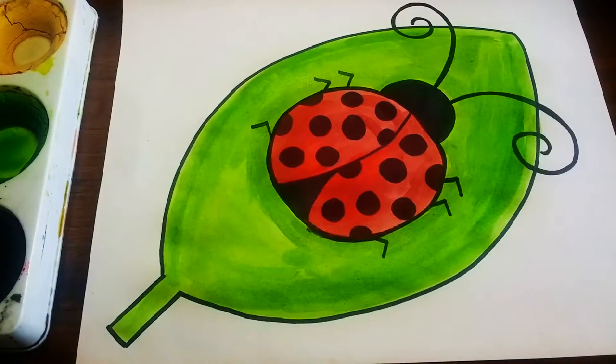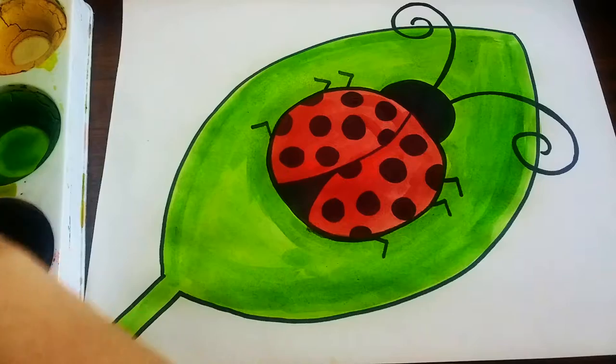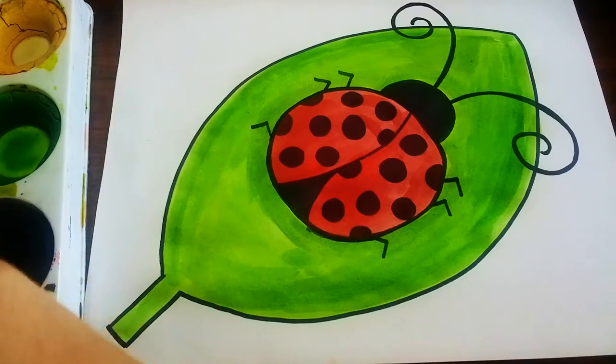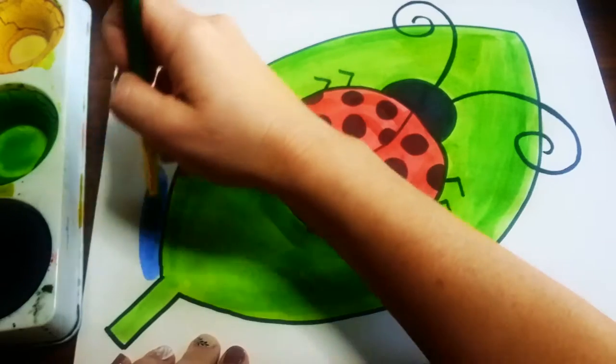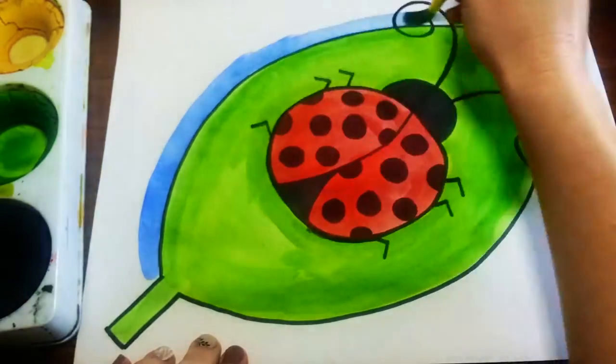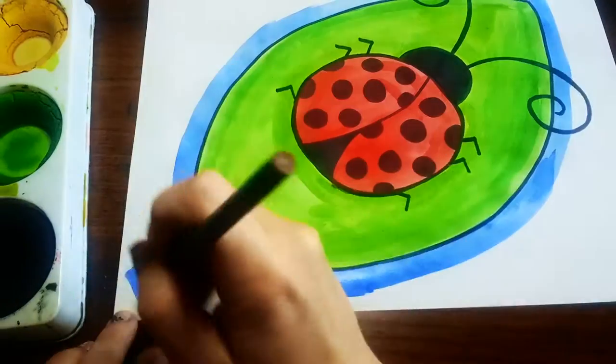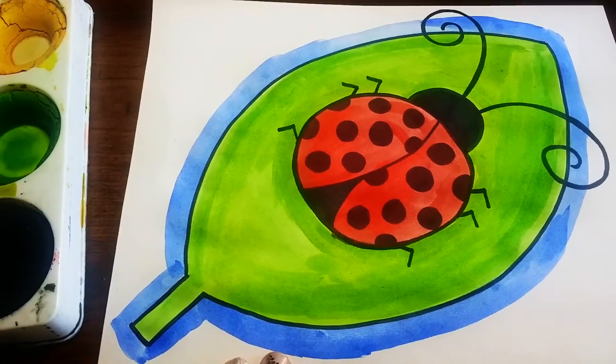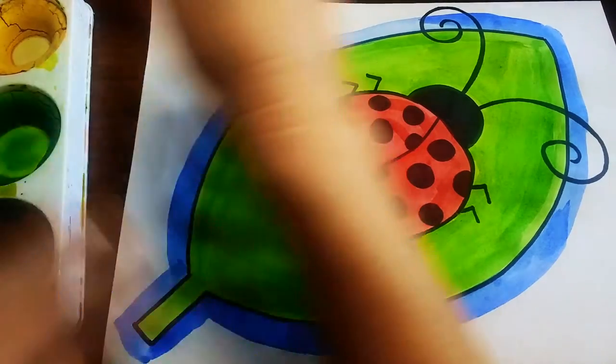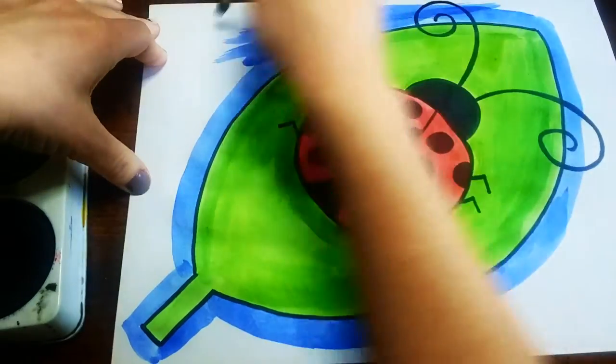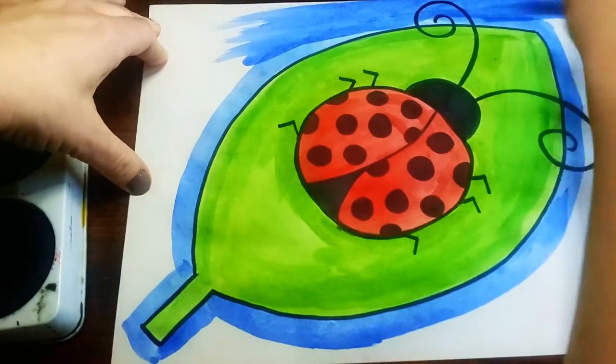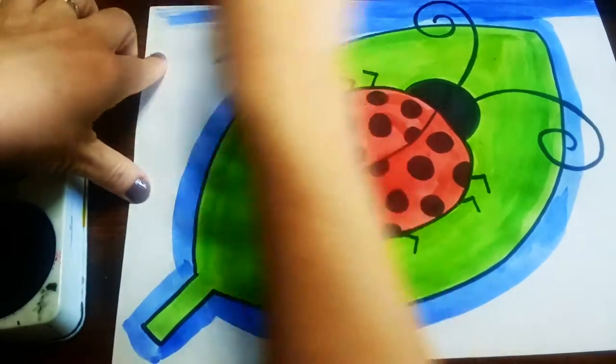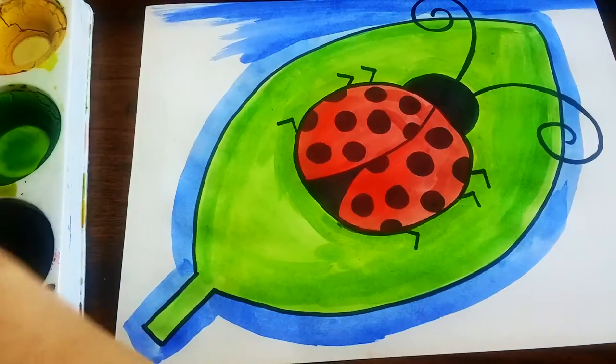Alright so after the leaf is painted you're gonna once again wash your paintbrush, wet it, and then pick up some blue paint and then you're gonna trace the outside of the leaf with the blue. And once that is done you are ready to paint in the rest of your background. So for this I'd like you to paint off of the edges of your paper so that the whole paper is colored in. So I shouldn't see any white space by the time you're done with this.